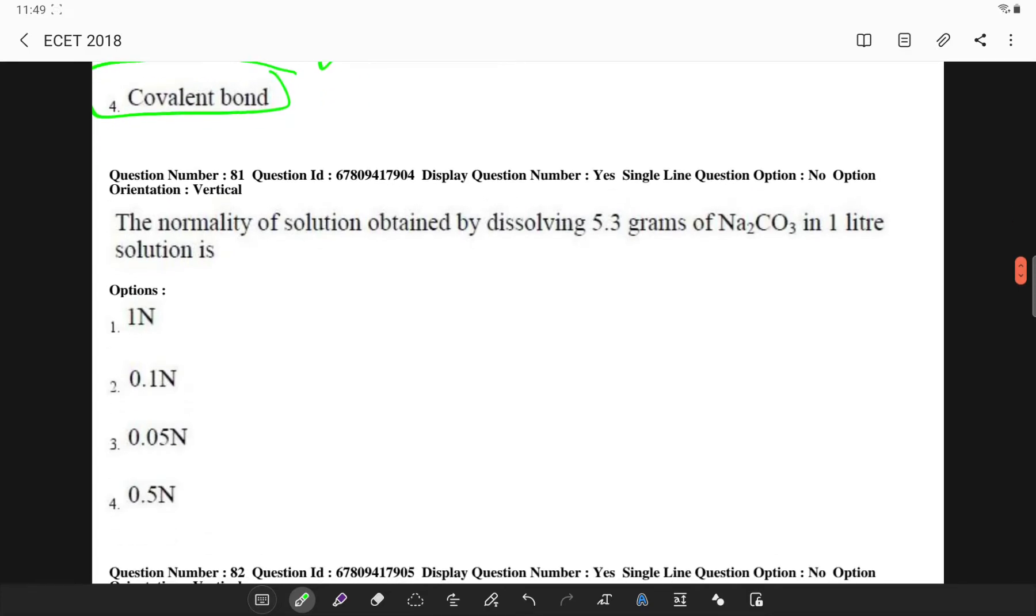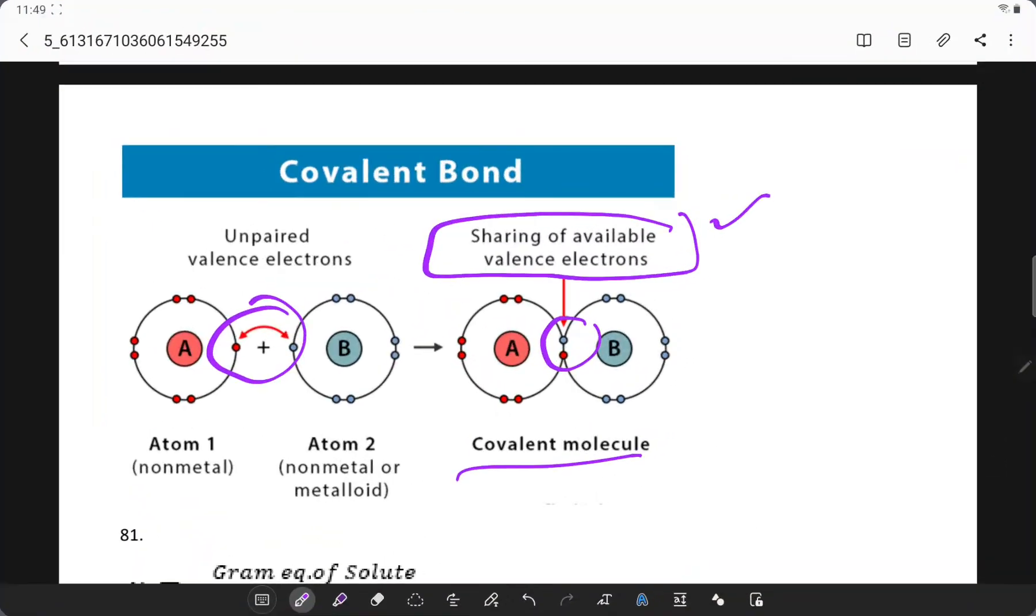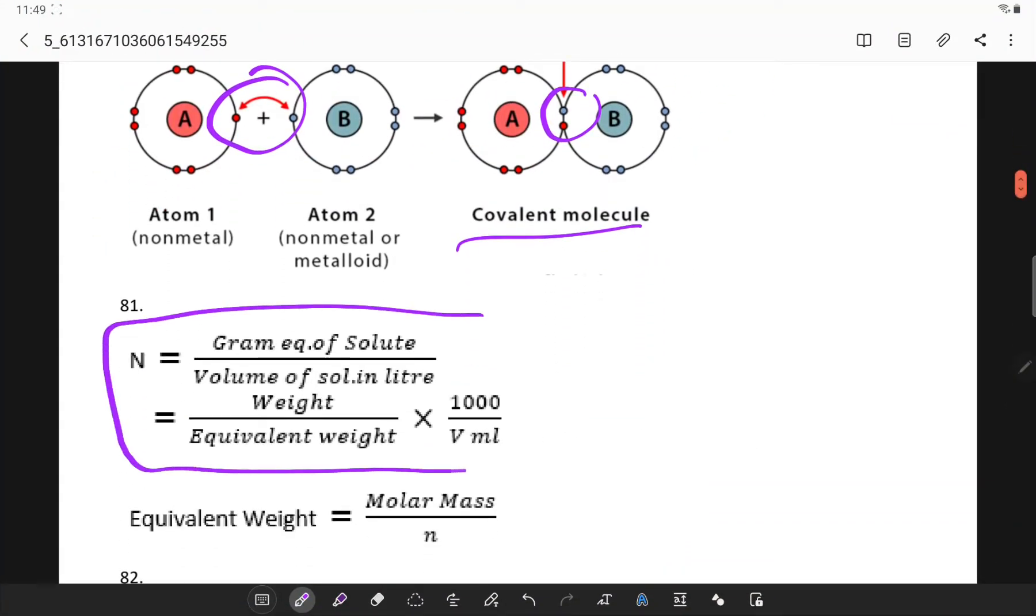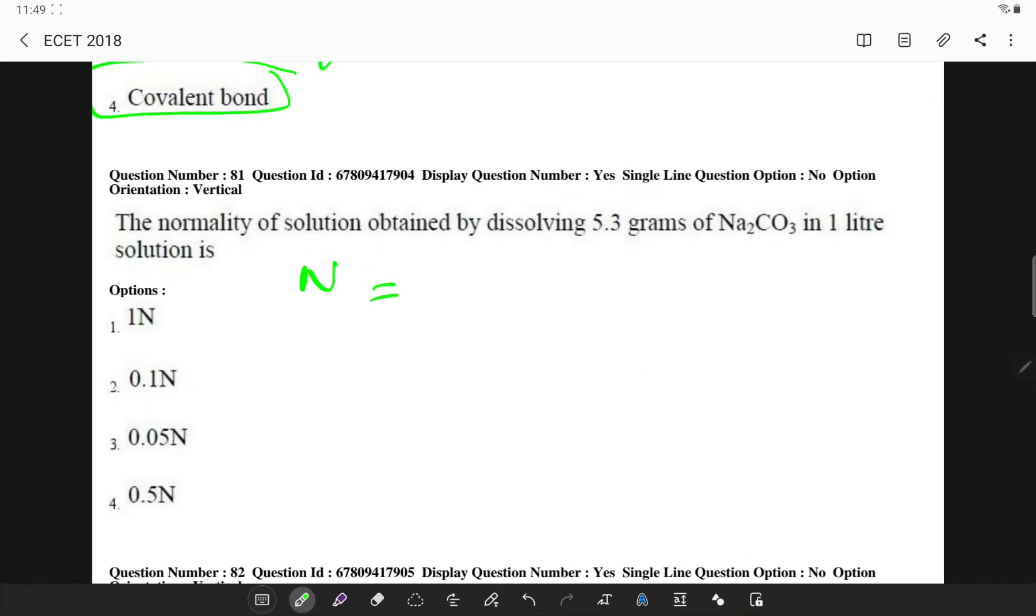What exactly is the normality of a solution? So we have the formula. Normality is equal to weight divided by... gram equivalent of the solute by volume of the solute in liter, or simply weight by equivalent weight times 1000 by volume in milliliters. Equivalent weight is molar mass by n.